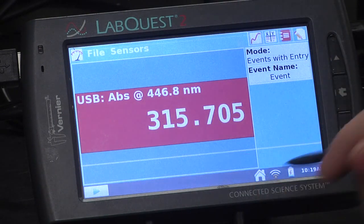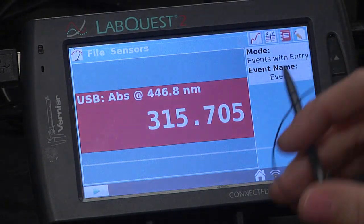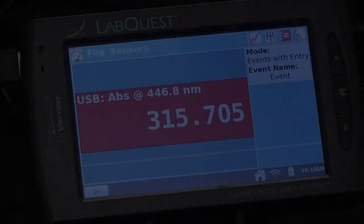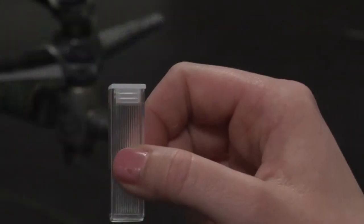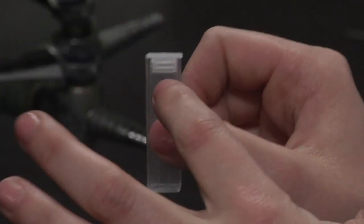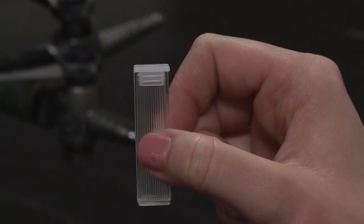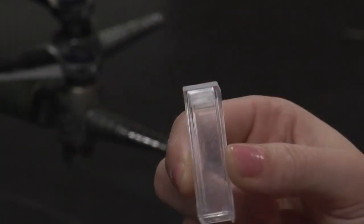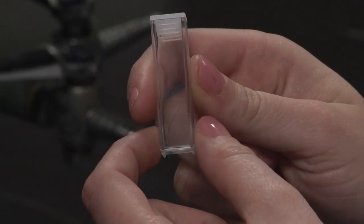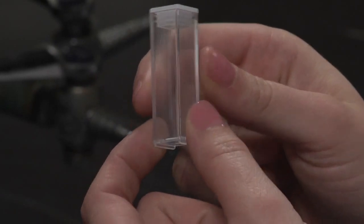To do that, you're first going to take a cuvette. Whenever you're handling a cuvette, always make sure you're touching only the ridged sides of the cuvette, because the light travels through the non-ridged side. Even the oil from your fingers can obscure the path of light.